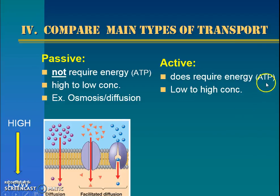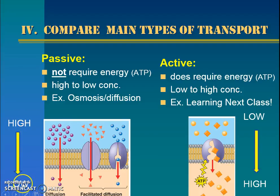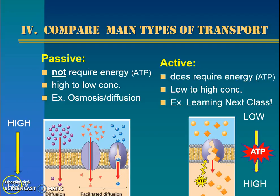We'll learn about active transport more next class. Just to give you a taste: it's going from low to high concentration, and it requires ATP because it's going against the gradient — the opposite direction — like climbing up a slide instead of going down. We'll practice all these things in class.